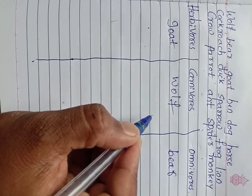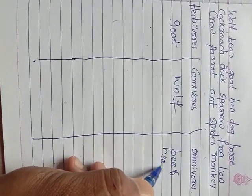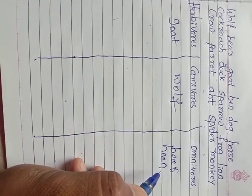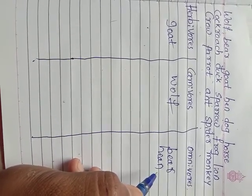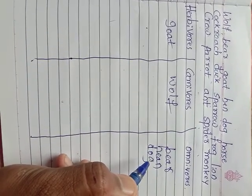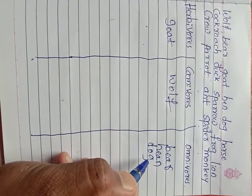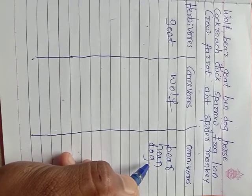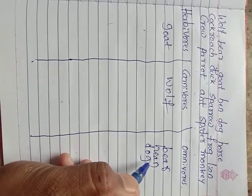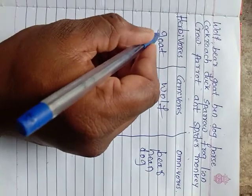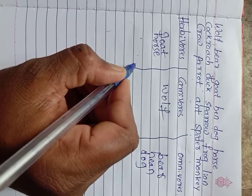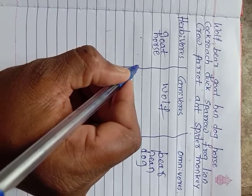Goat — you already know it is herbivorous because it eats only plants and plant parts. Hen is omnivorous because it eats grains as well as some insects. Dog is also omnivorous because it eats some plant parts, some insects, and meat as well. Horse is herbivorous because it eats only grass and other plant parts.